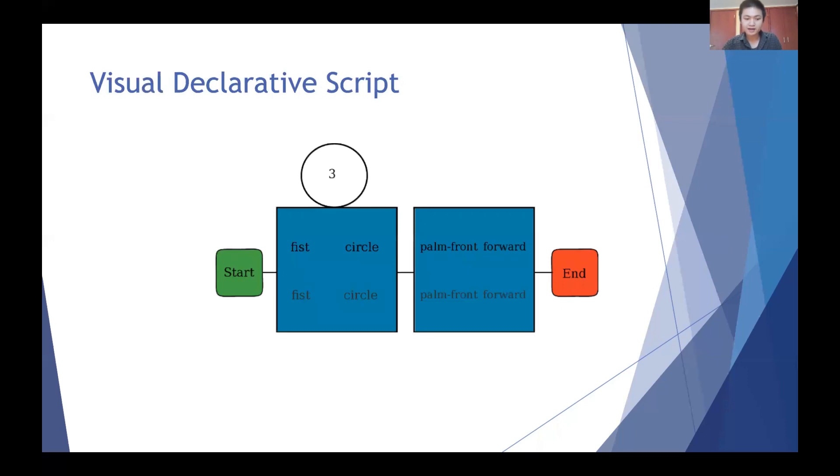Our visual declarative script concatenates these primitive gestures node by node to create a complex gesture. We enabled designers to place the nodes sequentially, as well as loop a particular node. For example, this script shows the movement of two hands with circles and fists, then forward and palm forward.